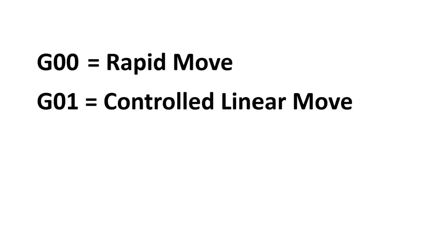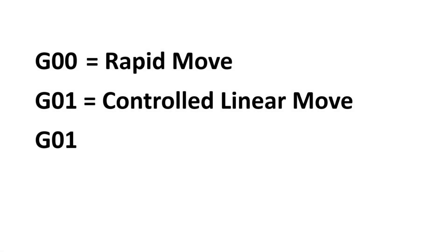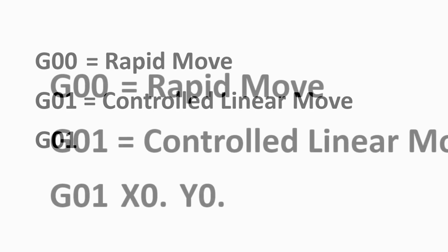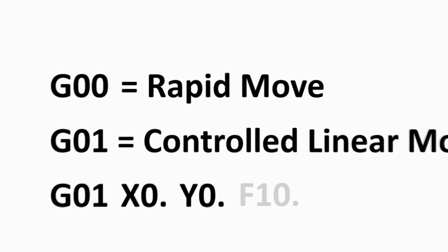G01 is controlled linear move. This instructs the machine to move to its next position at a controlled rate. For instance, G01 will usually be followed by a position and the feed rate at which the machine will move to that position.